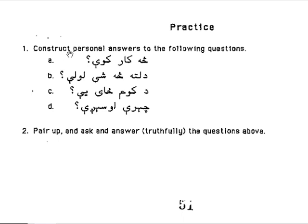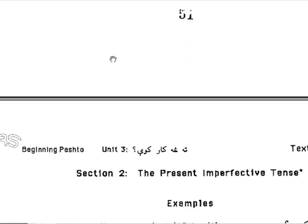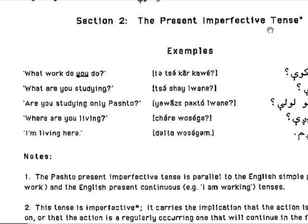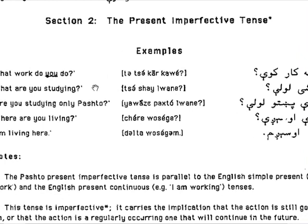Personal construct — personal answers to the following questions. The student can answer these. In the western dialect it would differ slightly. These are examples of the present imperfective tense of Pashto. 'Sa kar kowei' — what work do you do? 'Sishay lwalay' — what thing are you studying?